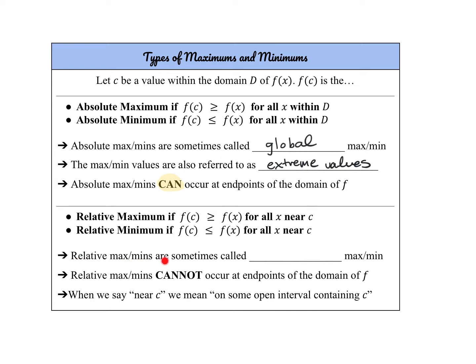Relative maxes and mins are sometimes called local maxes and mins — it means the same thing as relative. It is really important to note that relative maxes and mins cannot occur at endpoints; they have to be within your graph. And when we say 'near c,' what we mean is on some open interval containing c.